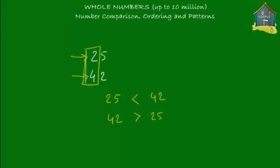You must always start from the left — compare the digits in the left place first. What if you mistakenly compared digits starting from the right? If you compared five and two first instead of two and four, you'd see that five is bigger than two and wrongly conclude that 25 is bigger than 42. But that's not right — 25 is not bigger than 42. So always start your comparison from the left digit and move to the right.